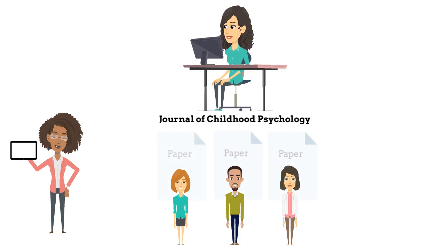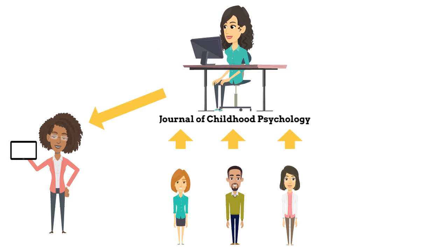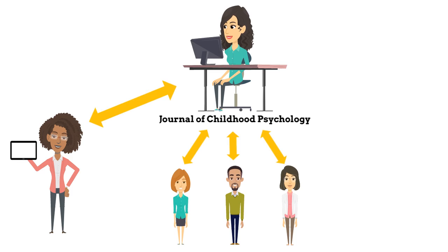The peer reviewers send their recommendations and comments back to the editor. If the paper needs revisions, the editor sends it back to Professor Jordan with the reviewers' comments. Professor Jordan doesn't know who the peer reviewers are — this makes the review process double-blind.